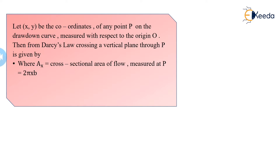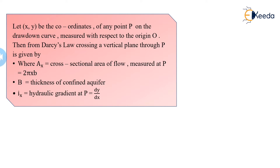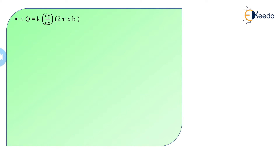For the confined aquifer, we consider that the storage is up to the height of the final water level, and the thickness of the confined aquifer is B. Through this section only, the water gets percolated and stored in the well. That is why the cross-sectional area is 2πXB. The hydraulic gradient I equals dY/dX. Substituting into the equation: Q = K × (dY/dX) × 2πXB. Rearranging: Q × dX/X = 2πKB × dY.